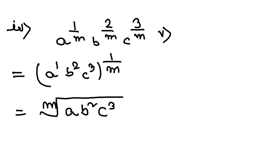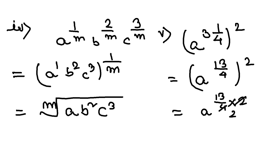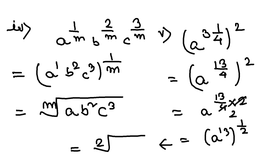Now go to question number 5: a to the power 3 and 1 by 4, whole squared. This means a to the power 13 by 4, whole squared, which is a to the power 13 by 4 into 2. This gives us the square root of a to the power 13.